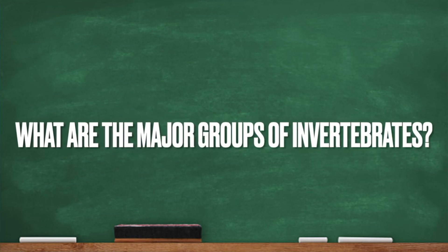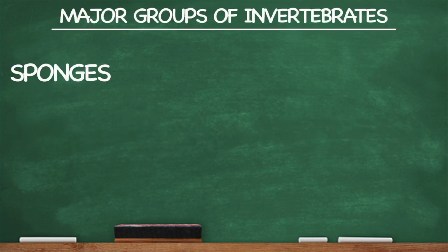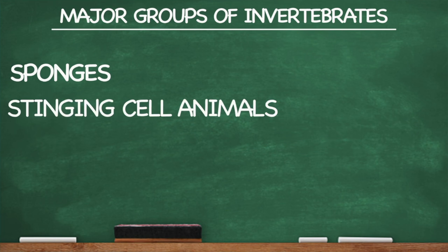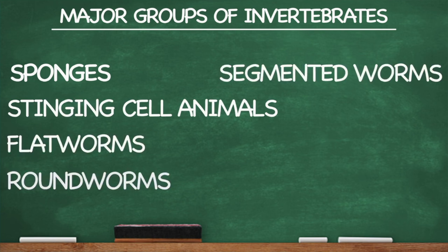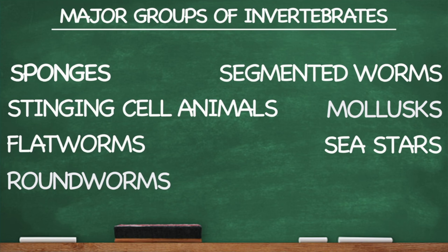Here's my question: What are the major groups of invertebrates? Sponges, stinging cell animals, flatworms, roundworms, segmented worms, mollusks, sea stars, arthropods.